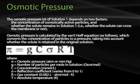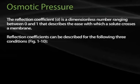Pi, the osmotic pressure, equals G (the number of particles per mole in solution) times C (the concentration) times sigma (the reflection coefficient, which varies between 0 and 1) times R (the gas constant) times T (the absolute temperature). The reflection coefficient sigma is a dimensionless number ranging between 0 and 1 that describes the ease with which a solute crosses a membrane.